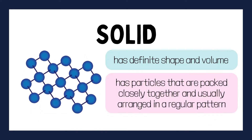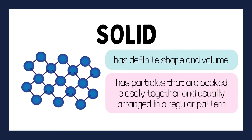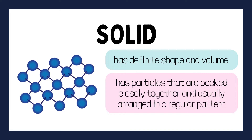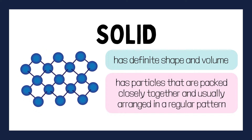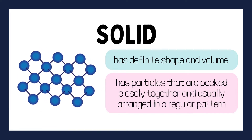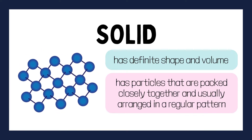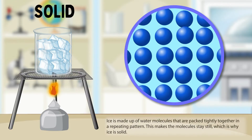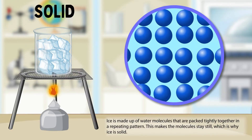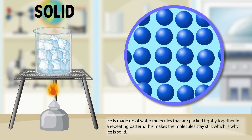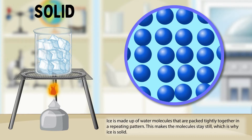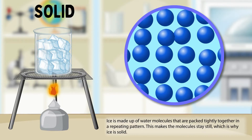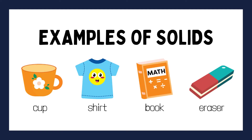Let's start with solids. A solid is characterized by having a definite shape and volume. The particles in a solid are closely packed together, often arranged in a pattern. They vibrate around fixed positions. Here are some everyday examples of solids you encounter.